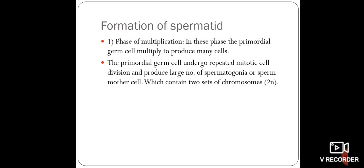In the phase of multiplication, the primordial germ cells multiply to produce many cells. The primordial germ cells undergo repeated mitotic cell division and produce a large number of spermatogonia, or sperm mother cells, which contain two sets of chromosomes. All such spermatogonia are diploid, having two sets of chromosomes.